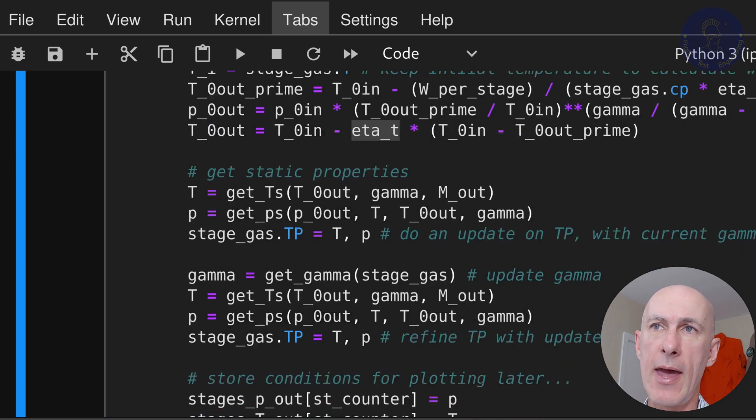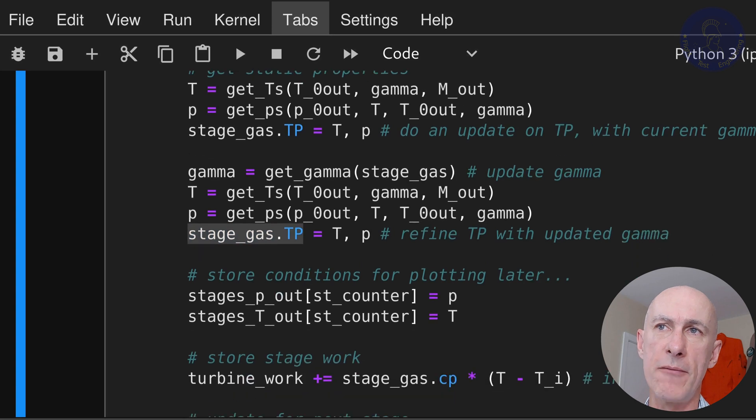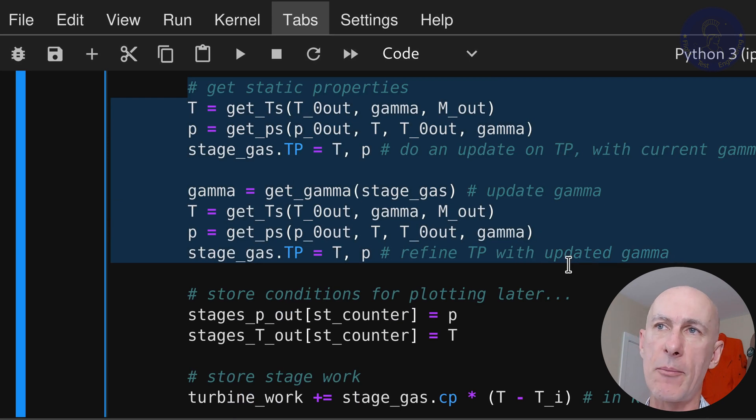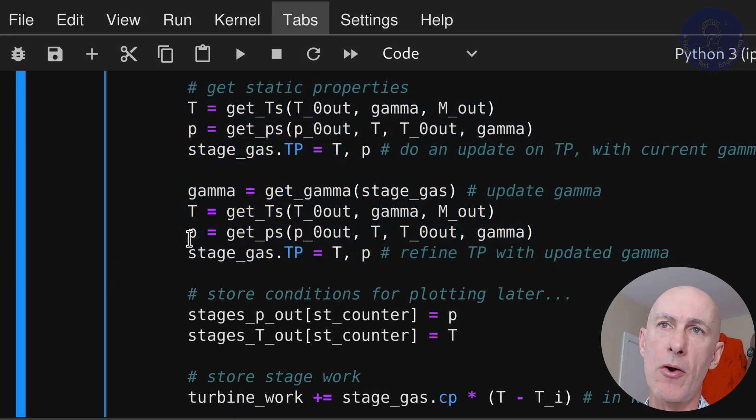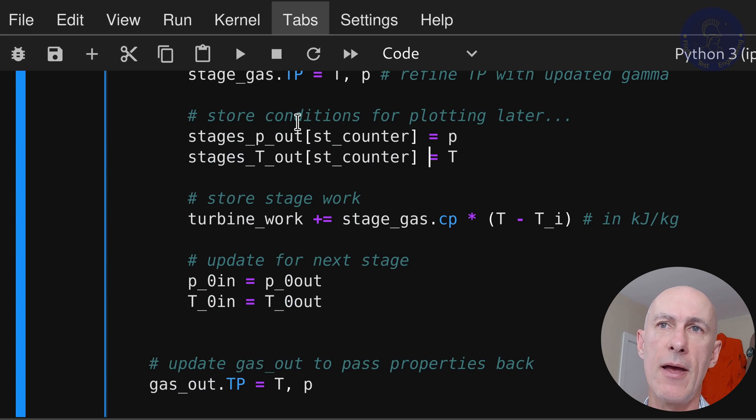Next, like we did before, we get the static properties and update the gas. We recalculate the gamma and update the gas T and P one more time. I did some experimentations here and two cycles is enough. We do this because to calculate the static properties we need gamma, and to get gamma we need static properties. So by doing one iteration we converge pretty fast. Then we store the temperature and pressure results in our collector lists. Add the work of the stage to the turbine work collector. Then we make the pressure and temperature going out of the stage as the values going into the next stage. And run the loop again until all stages are finished.